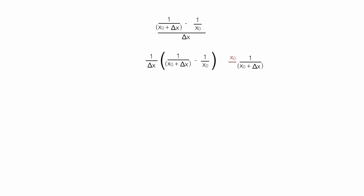So I'm going to multiply x0 over x0 times the first part of the equation, and then multiply x0 plus delta x divided by x0 plus delta x times the second part of the equation.